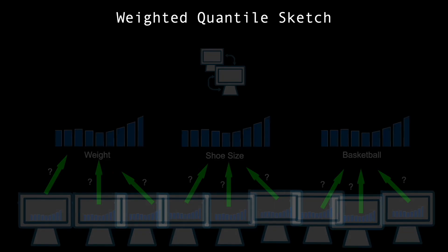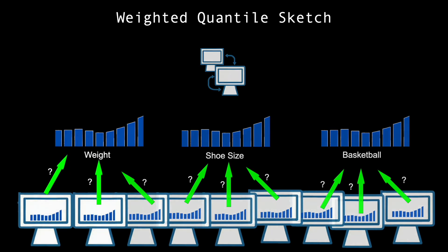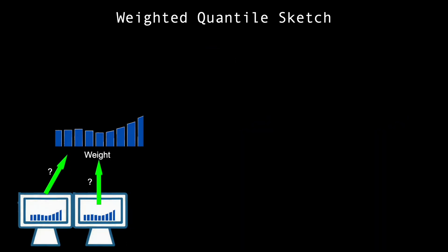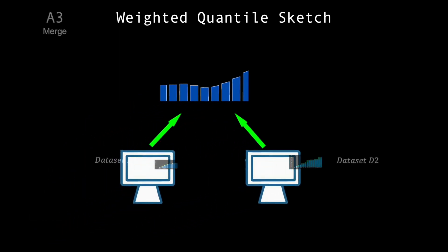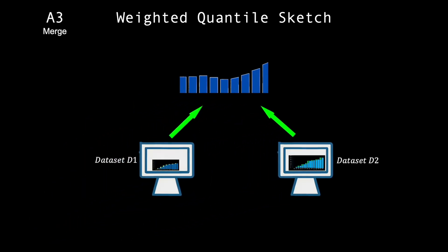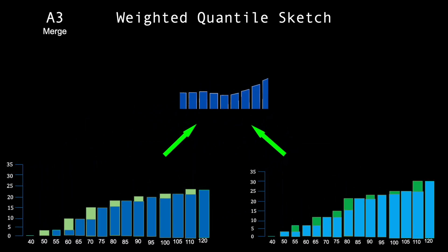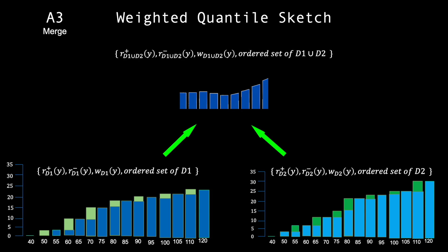Coming back to our parallel computing, once we have constructed the quantile summaries, they are zero approximate. A3 in the paper describes how we can merge two summaries together to create a new summary. We represent this as follows. Notice D1 and D2 have been unioned.